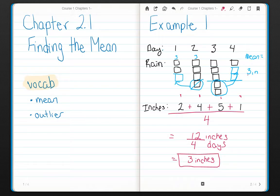12 inches divided by 4 days equals 3 inches of rain per day. So I can see that whether I use a diagram, I get 3 inches. Whether I use the math, I get 3 inches of rain. So let's look at example 2.